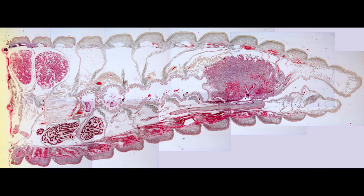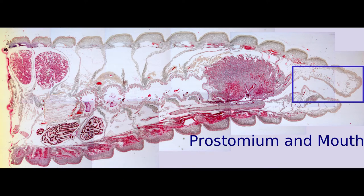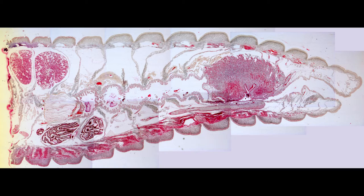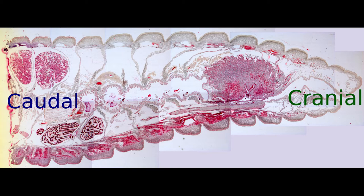On the right we can see the earthworm's prostomium and mouth. As in the transverse section, there's specific terminology for orientating ourselves. Towards the right would be cranial or towards the head, whilst the left side of the slide would be caudal, moving towards the tail.